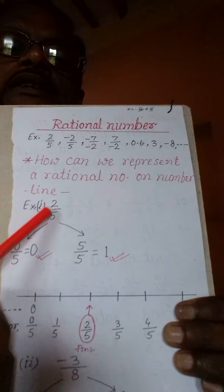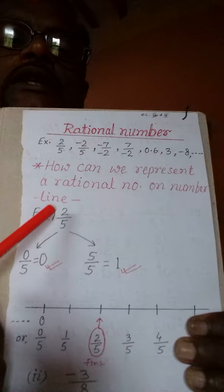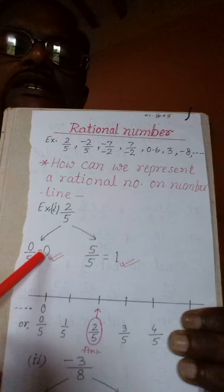इसके लिए आपको करना क्या होगा? कोई भी rational number जो आपको दिया गया है उसे represent करने के लिए, उसके numerator को आप left side में कम करते हुए देखेंगे कि उस दिये हुए denominator से कितना कम करने पर वो कट जाता है। तो हम 2 को 1 करेंगे तो 5 से नहीं कटेगा। 0 करेंगे तो 5 से कट जाएगा — यानि 0 by 5 is equal to 0 — तो left side का integer मालूम हो जाता है।